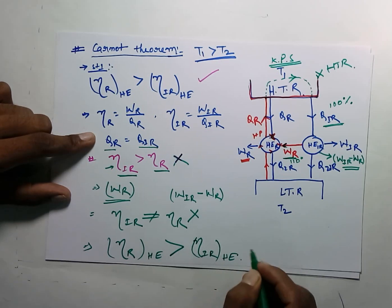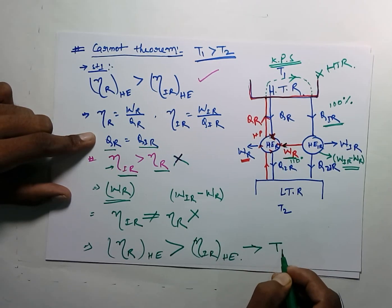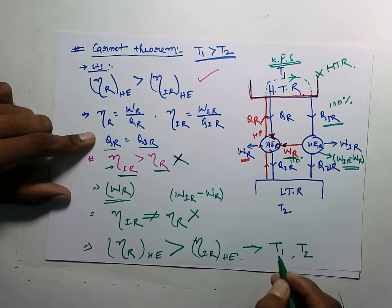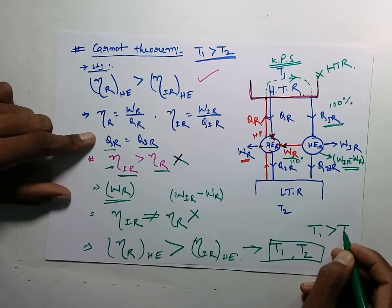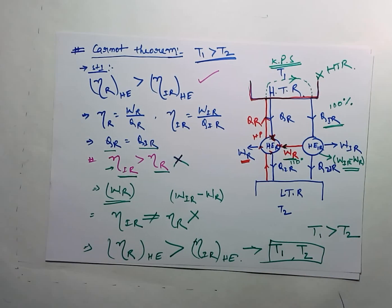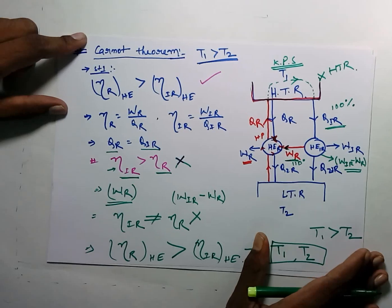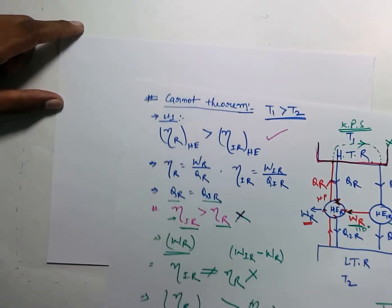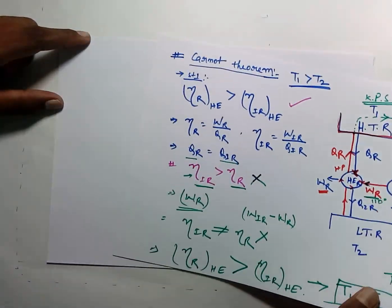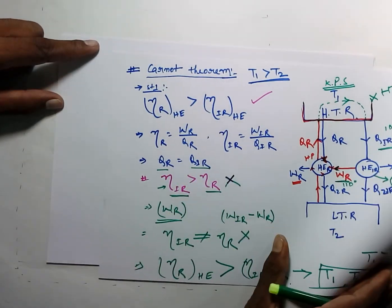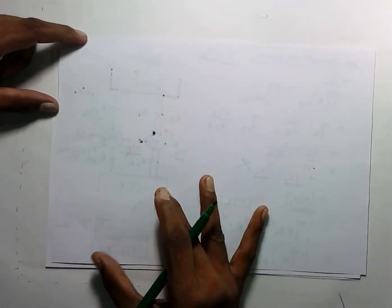So, an irreversible heat engine operating between temperature limits T1 and T2, where T1 is greater than T2, will always have lower efficiency than a reversible heat engine. This is all about the first statement of Carnot Theorem. Now let me tell you the second statement of Carnot Theorem once again.